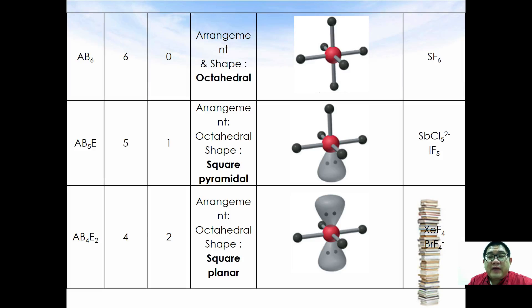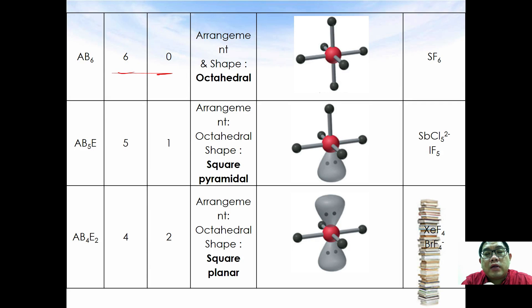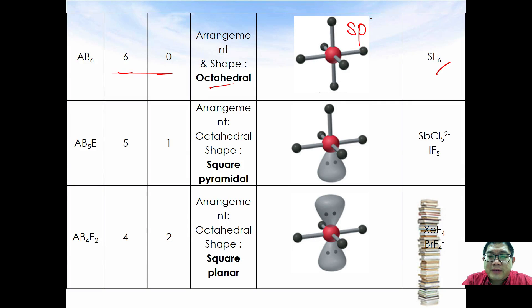The next VSEPR shape is AB6, where you have six surrounding atoms and no lone pair electrons. The shape is octahedral, and an example is SF6. In terms of hybridization, AB6 takes the hybridization of sp3d2.